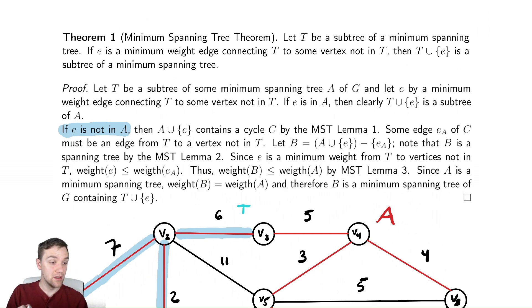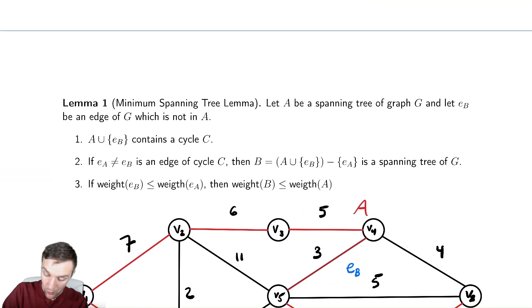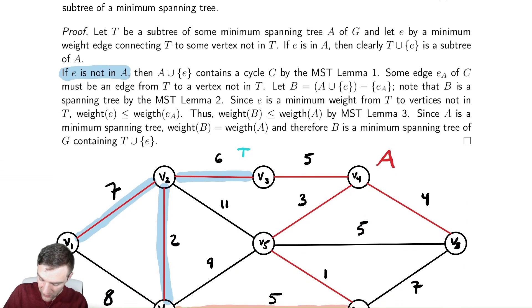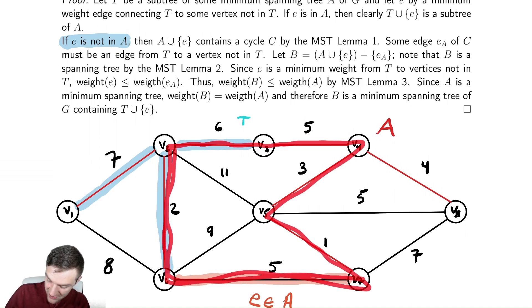So, under that assumption, if we were to consider adding this edge E to A, it would create a cycle. Why would it create a cycle? Well, A was a spanning tree and we added an edge to it. And according to part 1 of our minimum spanning tree lemma, adding an edge to a spanning tree will always create a cycle. So, by adding E to A, it must contain a cycle by part 1 of the lemma. Since we have created a cycle, let's look at this example. We create a cycle here in this problem for A. That is the cycle we create.